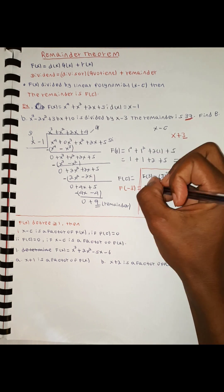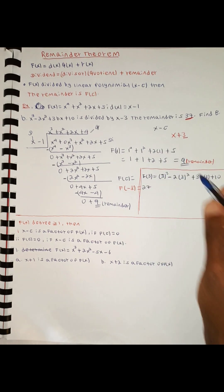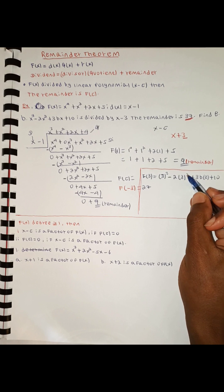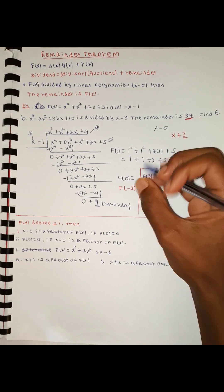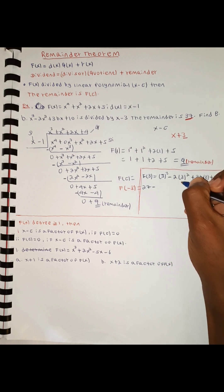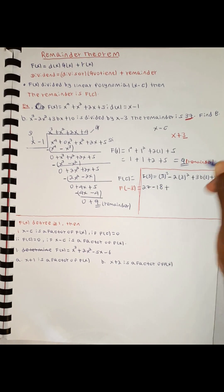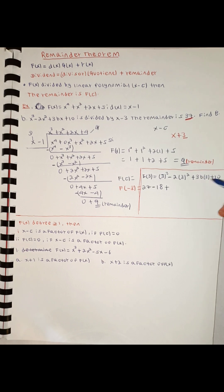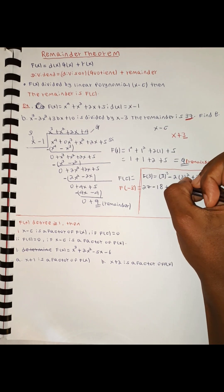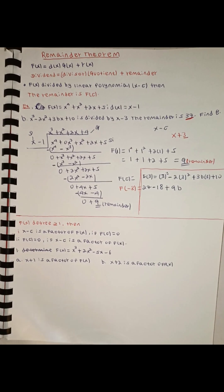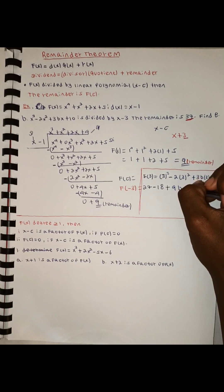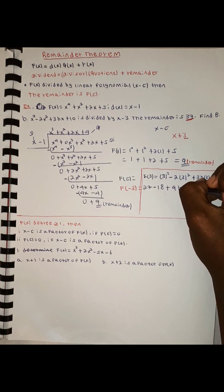3 cubed is 27. 3 squared is 9. So we have 27 minus 2 times 9 plus 3b times 3 plus 2, which gives us 27 minus 18 plus 9b plus 2 equal to 10. Solving for b: 9b equals 10 minus 11, so b is solved.